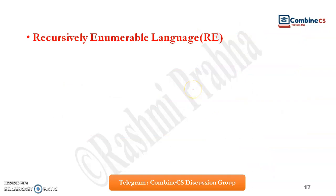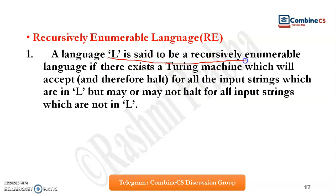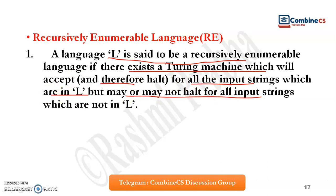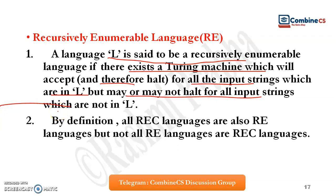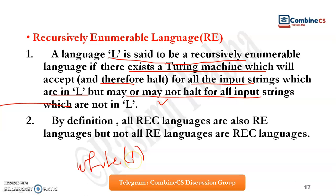Moving to the next topic: what is recursive enumerable language? A language L is said to be recursive enumerable if there exists a Turing machine which will accept and therefore halt for all the input strings which are in L, but may or may not halt for all the input strings which are not in L. For example, if you put an infinite loop with condition one, it will generate an infinite loop and the machine will not halt. We can conclude that all recursive languages are also recursive enumerable, but not all recursive enumerable languages are recursive.